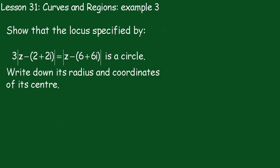Lesson 31, Curves and Regions Example 3. We have to show that the locus specified by 3 times the modulus of z minus 2 plus 2i is equal to the modulus of z minus 6 plus 6i is a circle, and then write down its radius and the coordinates of its center.